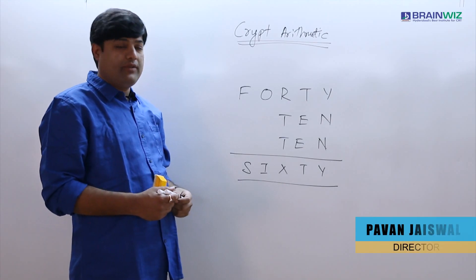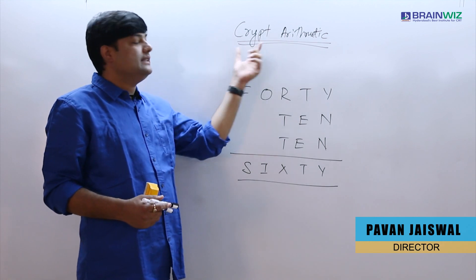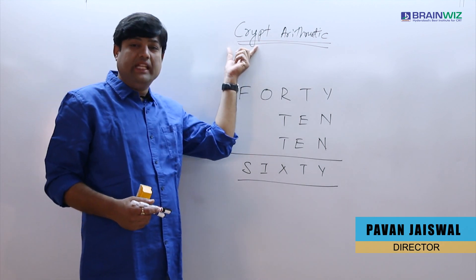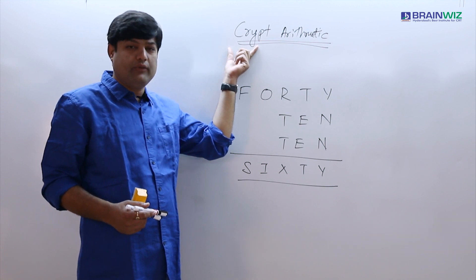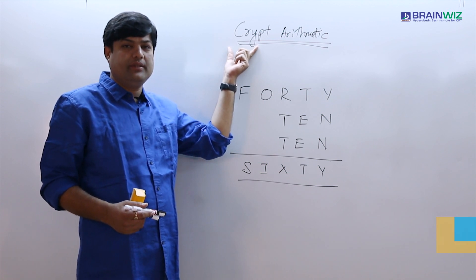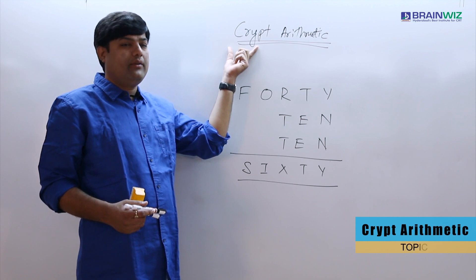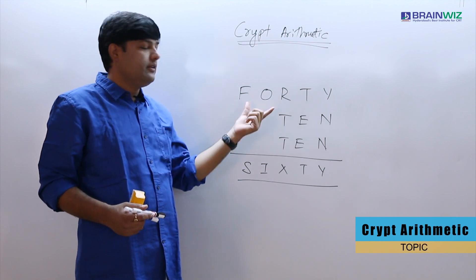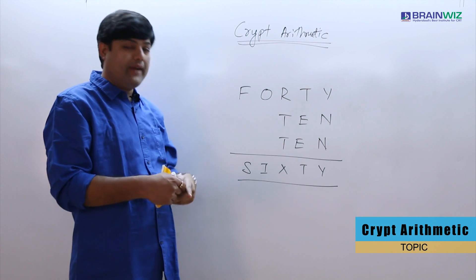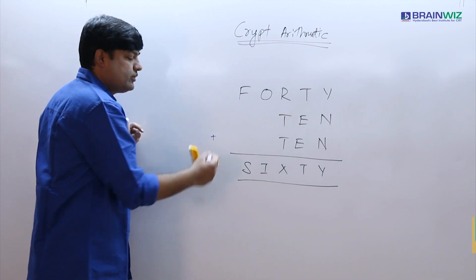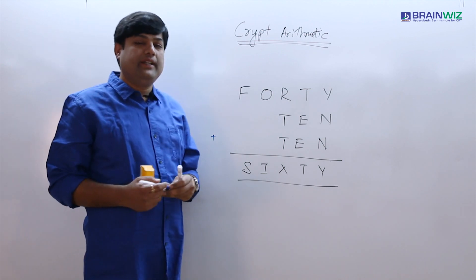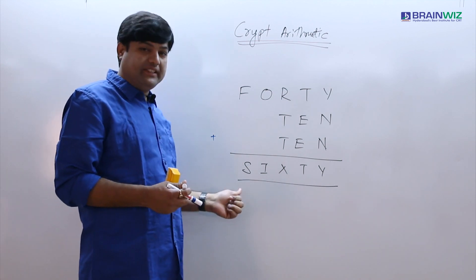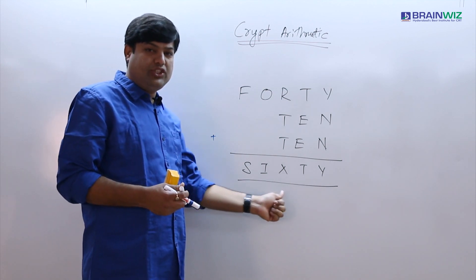We are going to see a question from cryptarithmetic. This is an important topic for elitmus and is commonly given in Infosys and TCS companies. The question is: 40 plus 10 plus 10, we have to add and get the sum as 60. We need to find out what is the value of 60, S I X T Y.